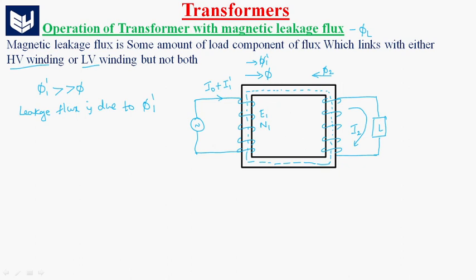Let us say phiL1 is the leakage flux in the primary winding. It is better to follow the convention that phiL1 is the leakage flux in the primary winding, and similarly, phiL2 is the leakage flux in the secondary winding.